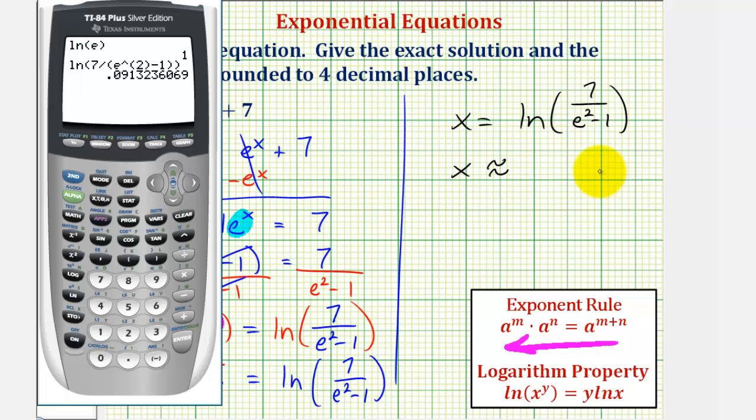So to four decimal places, x is approximately 0.0913.